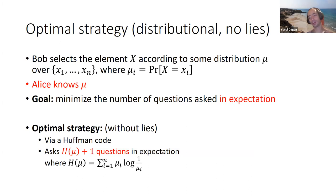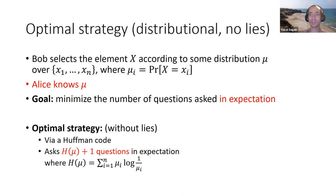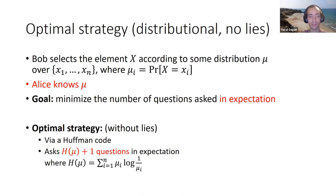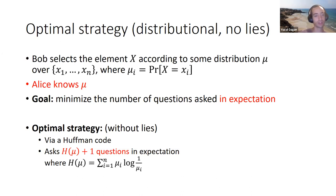In the distributional setting with no lies, there is a very simple solution: directly applying Huffman code, which asks at most the entropy of the distribution plus one questions in expectation. The entropy of distribution μ is the sum over all i of μ_i times log(1/μ_i). The entropy captures the number of questions Alice should ask in the optimal strategy.